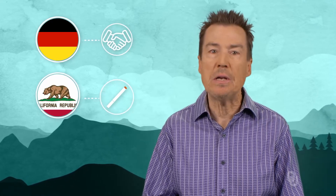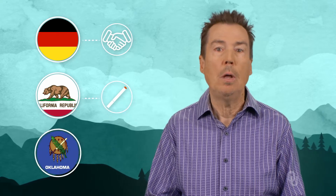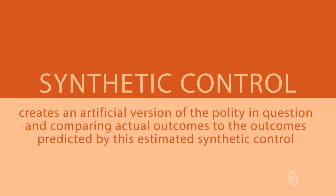Many times we have questions about a single policy. For example, what was the economic cost to West Germany of reunification, or what is the effect of California's high cigarette tax on smoking, or what is the effect of Oklahoma's right-to-work law on wages or employment. To answer these kinds of questions, we need to know what would have happened without the policy intervention. Synthetic control does this by creating an artificial version of the polity in question and comparing actual outcomes to the outcomes predicted by this estimated synthetic control.